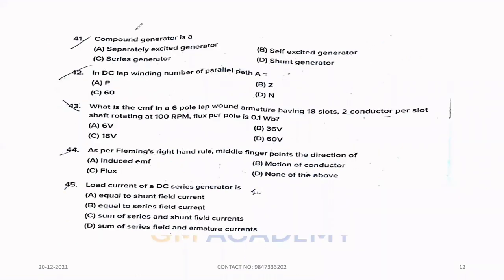Forty-one. Compound generator is. Option B, Self-excited generator. Forty-two. In DC lap winding, number of parallel path A equals. A equals number of poles. Option A.